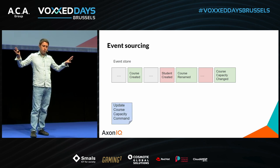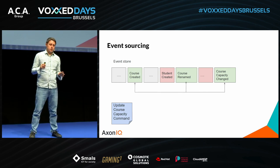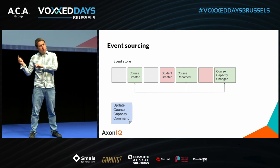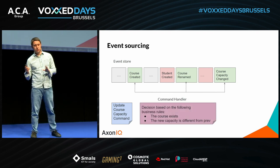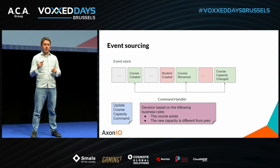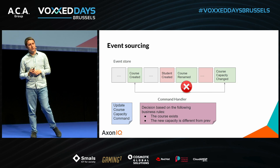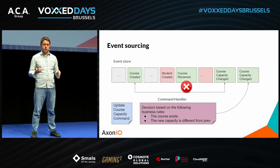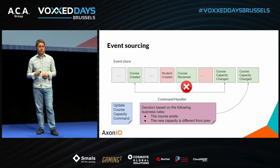So the command handler loads only the data it needs and, based on that, publishes a course-capacity-changed event or not depending on whether the data meets the criteria. When looking at the event store, instead of streaming events per specific aggregate identifier, we stream events based on a query we call a stream query. This query is comprised of two things: the domain identifiers — what we are interested in — and the types of events, to narrow down the information we need to retrieve.